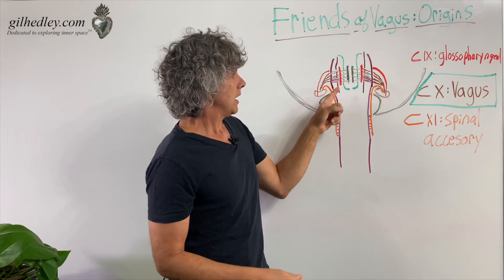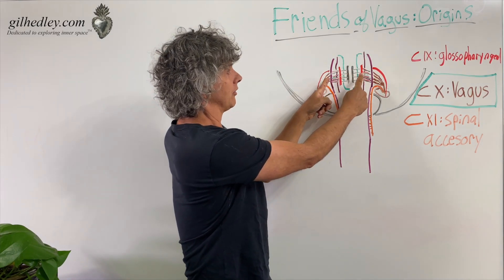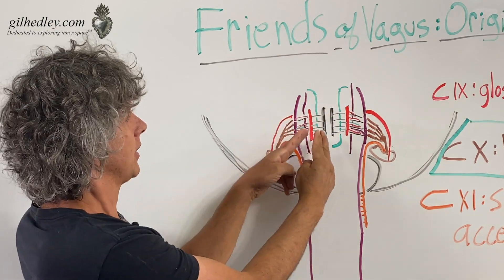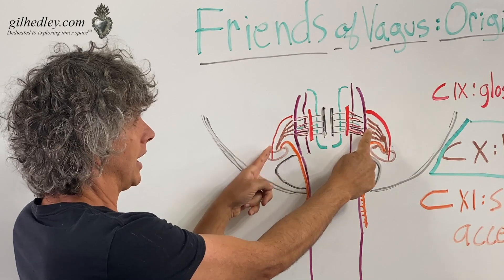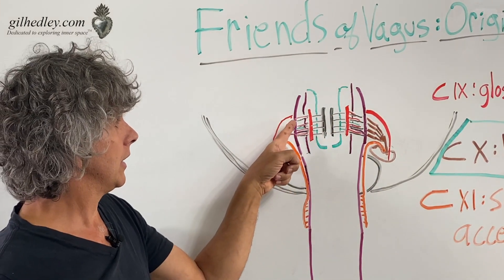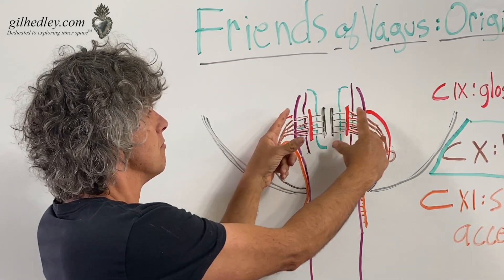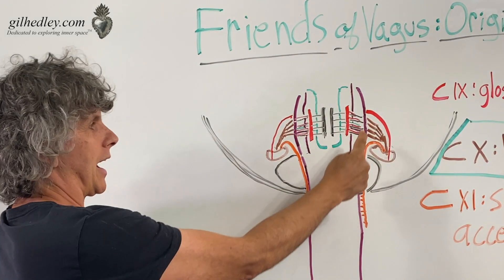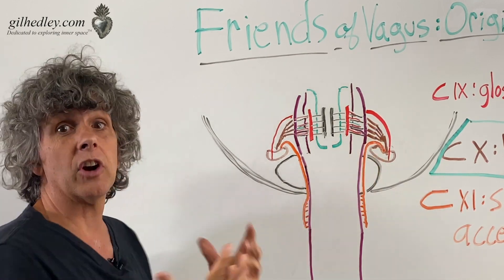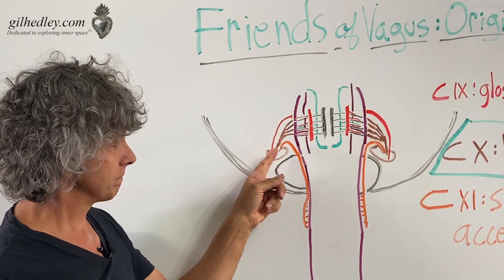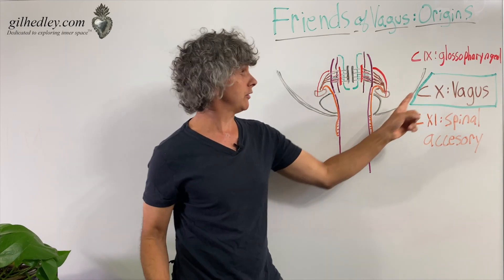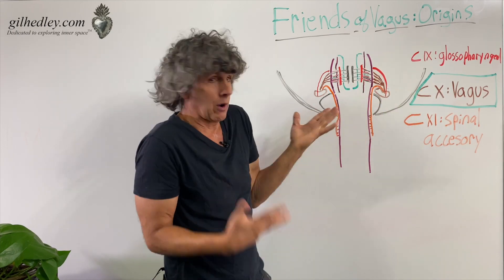Here I show several nuclei — one, two, three, four — on each side, contributing branches. When you look at the vagus nerve as it emerges from the medulla oblongata, we see several strands that converge into a bundle. This brown ink here is cranial nerve 10, the vagus nerve.